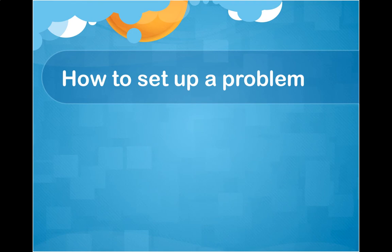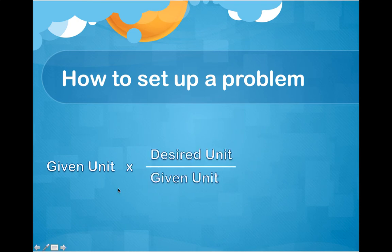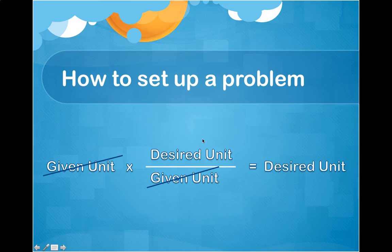How do you set up a problem using dimensional analysis? Start with your given unit, and figure out where you're going so you can line up your conversion factors. Your given unit has to go on the bottom of the conversion factor, and your desired unit goes on the top, so that your given unit will cancel out mathematically because they divide. You're then left with your desired unit.